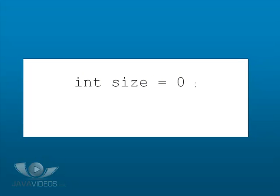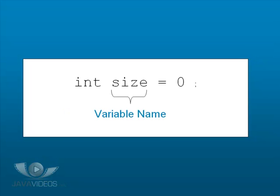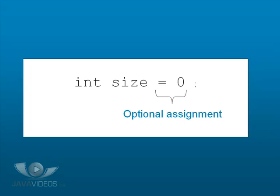Here is an example of a variable declaration. The first part is the type of variable — in this case it is of type int. The next part is the variable name. We will come into the naming rules and the conventions later on. Next is an optional assignment. This part can be ignored if you wish, but if you do, the variable needs to have been assigned a value before it is first read. If there is no assignment, there is no default set — its value is undefined.